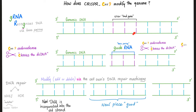Then you cut it from here and here. Who's going to cut? Cas9 endonuclease — it cleaves the DNA, the double-stranded DNA, it cuts it down. Then remove this, cut, cut, and paste. Paste what? A new functioning gene.